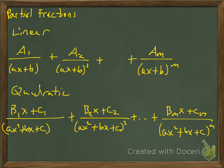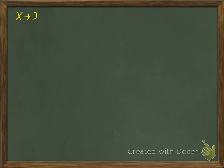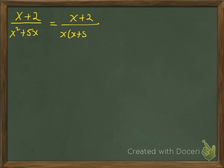We probably won't see factors with more than a squared term, but it's certainly possible. We're going to do two examples. Let's say we want to break down (x+2) over (x²+5x). The first thing we need to do is factor that denominator, which gives us x(x+5). So our two factors are x and x+5 — both linear and both to the first power — so we just need A over x and B over (x+5).